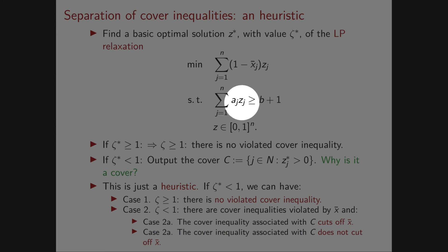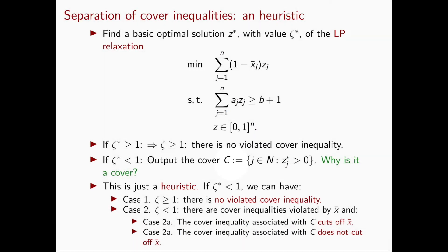We're increasing some of the values of zⱼ here. Therefore, these sums becomes larger since the aⱼ are positive. And so this remains greater than or equal to b + 1. And so capital C is a cover.